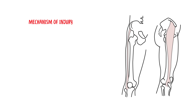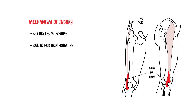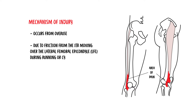Iliotibial band syndrome occurs from overuse, not acute trauma. The exact mechanism of the pain is unclear. Previously, pain was thought to be due to friction from the iliotibial band moving back and forth over the lateral femoral epicondyle during activities such as running or cycling.